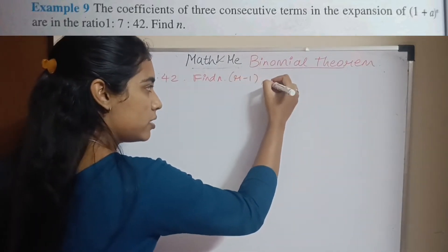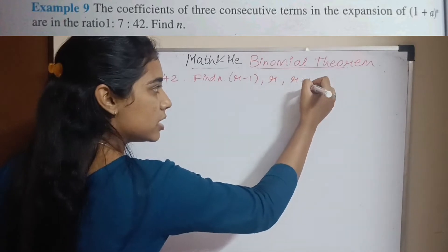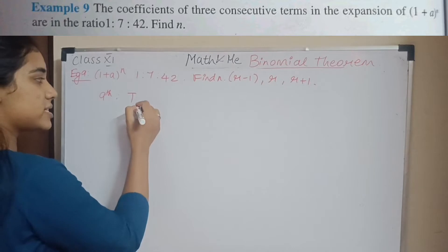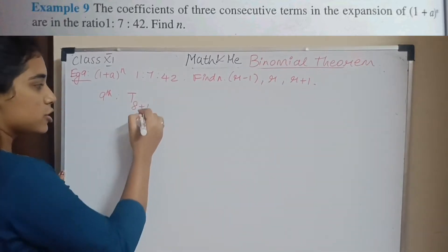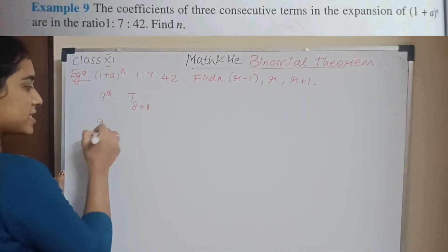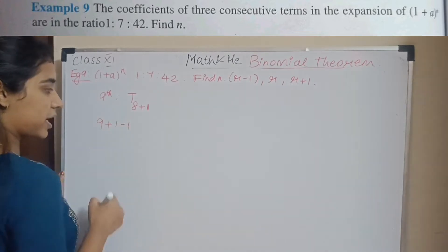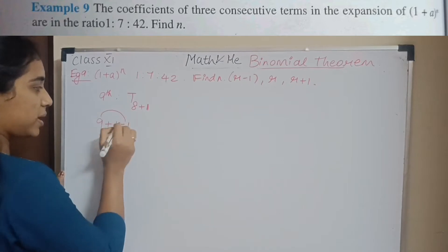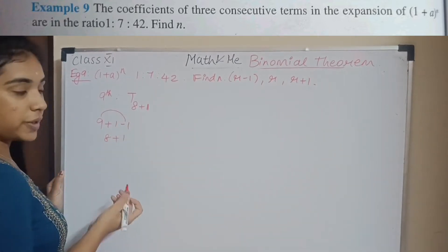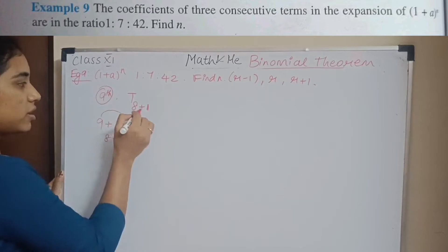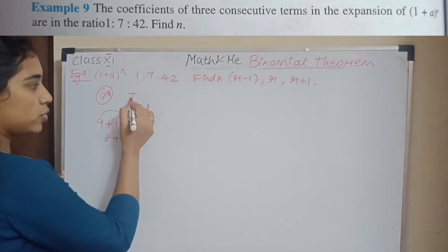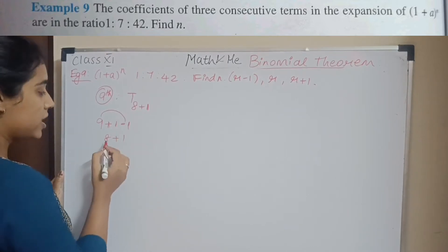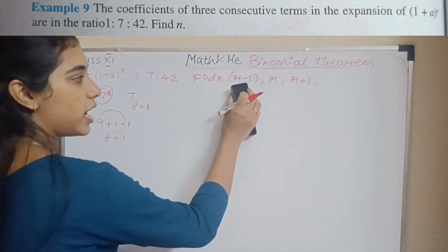I take the three consecutive terms to be r-1, r, and r+1. For example, the ninth term is written as T(8+1). So to obtain the term number, for the ninth term I do T(8+1) — adding 1 and subtracting 1 does not change the number.